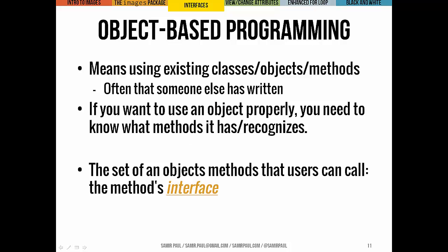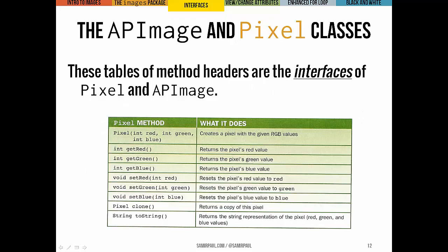Now we're ready to talk a little more about object-based programming — that just means using existing classes, objects, and methods to solve problems, oftentimes code that someone else has written. If you want to use an object properly, you have to know what methods it recognizes, what it can actually do, and how to call those methods. If we gather all those methods into one place, we call that the object's interface.